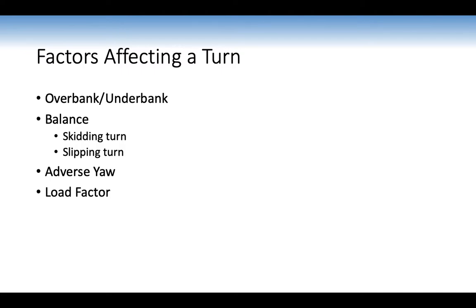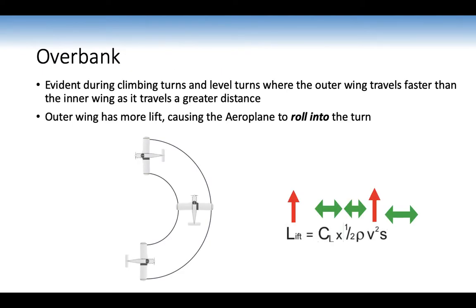Factors affecting the turn: overbank, underbank, balance, skidding turns, slipping turns, adverse yaw, and load effect. Overbank is evident during climbing turns and level turns, where the outer wing travels faster than the inner wing — it travels a greater distance — giving it more lift and causing the aeroplane to roll into the turn. The increase in speed increases lift and causes overbanking.